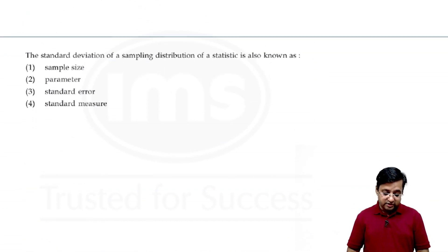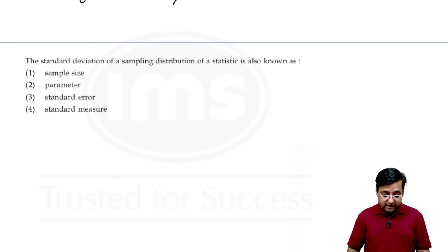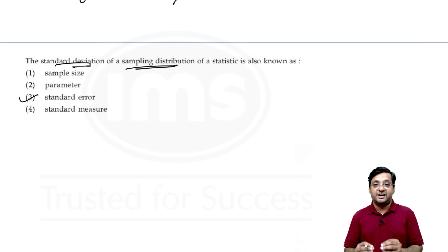Now coming to the next question. Next question is a theory question from the chapter inferential stats. The standard deviation of a sampling distribution of a statistic is known as? If we take a sample from a population and then try to find the deviation from the population or the deviation from the mean, then it will be an error. A standard deviation is an error. So this will be a standard error. This is known as standard error because we are finding the deviation.